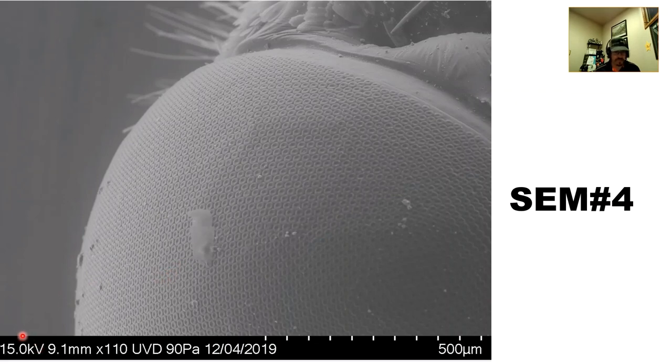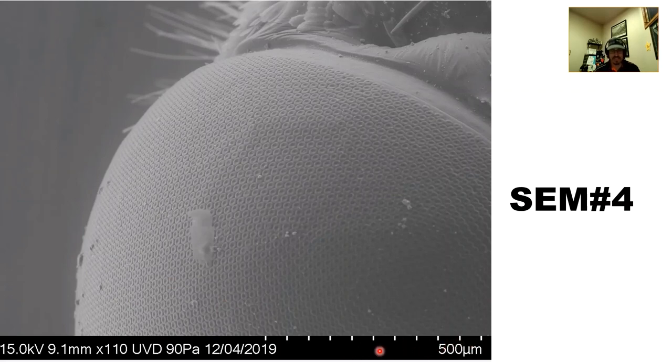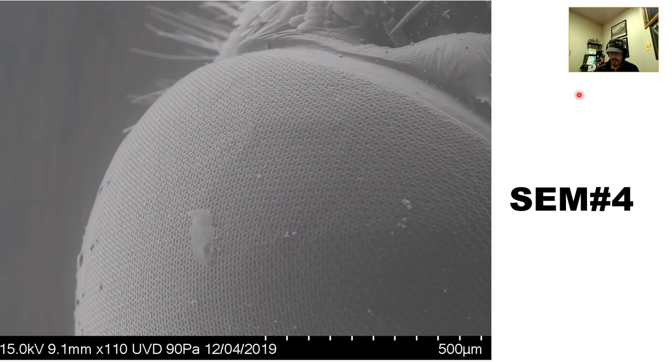We were running at 15 kilovolts of accelerating potential — you could calculate the wavelength using our SEM wavelength equation. Working distance was 9.1 mm. The original print magnification was only 110x; the 500-micron scale bar gives that away. 500 microns is half a millimeter, so we're not pushing the limits of this instrument by any means.